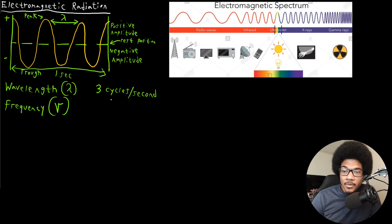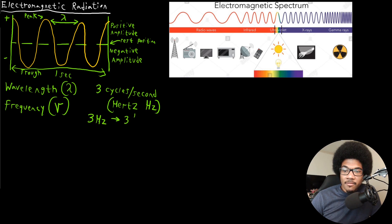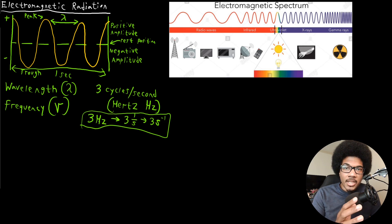The unit cycles per second is usually called Hertz, denoted as Hz. So this wave we would say has a frequency of three Hertz. This can also be written as three inverse seconds, or more succinctly, three seconds to the negative one. These are three different ways to denote the exact same unit — three cycles per second or three Hertz.